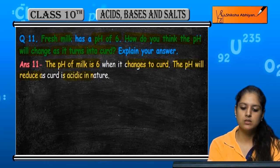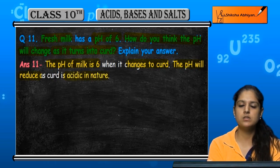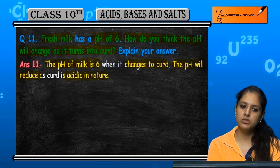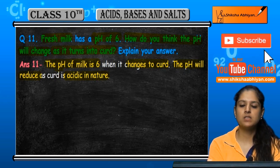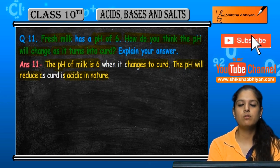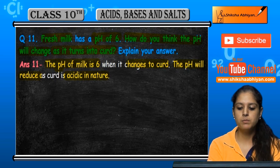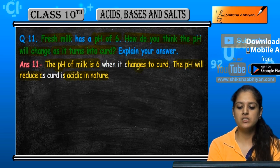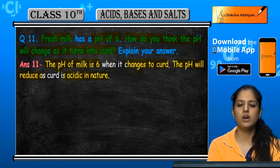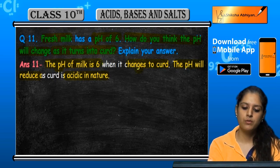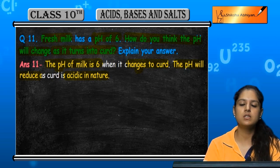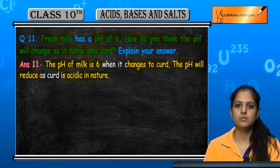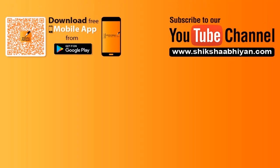Because acidic substances have lower pH, and the curds is more acidic than fresh milk, the pH will decrease from 6 — it will decrease below 6.